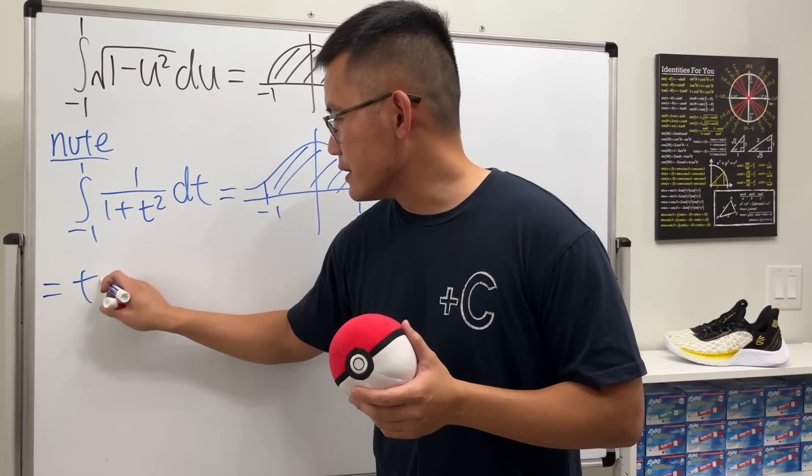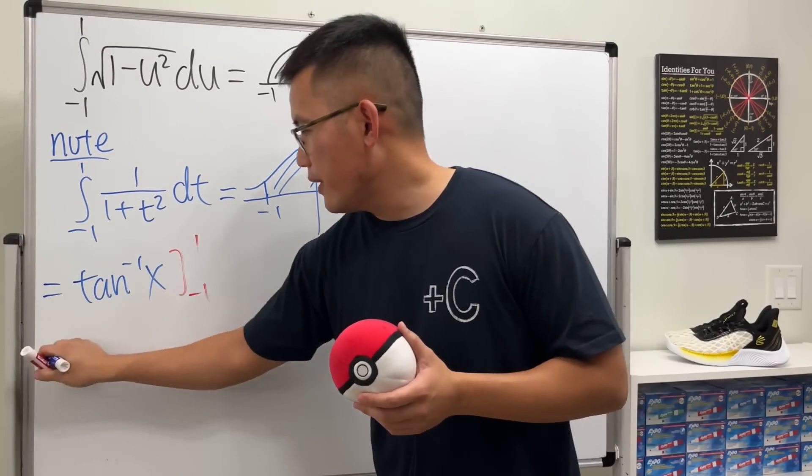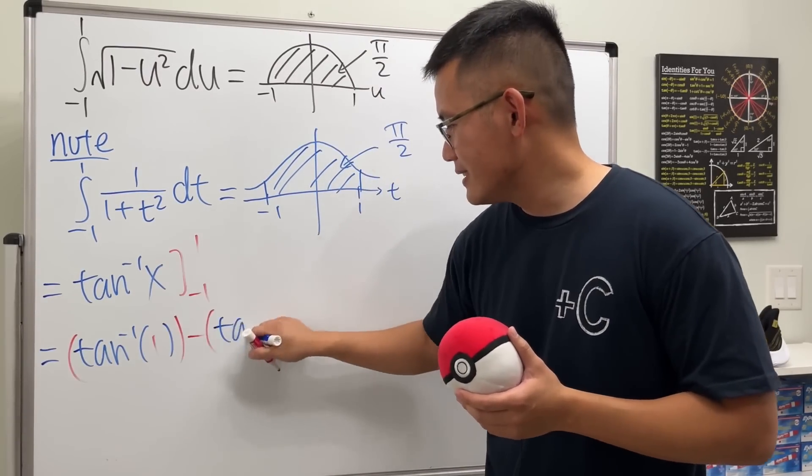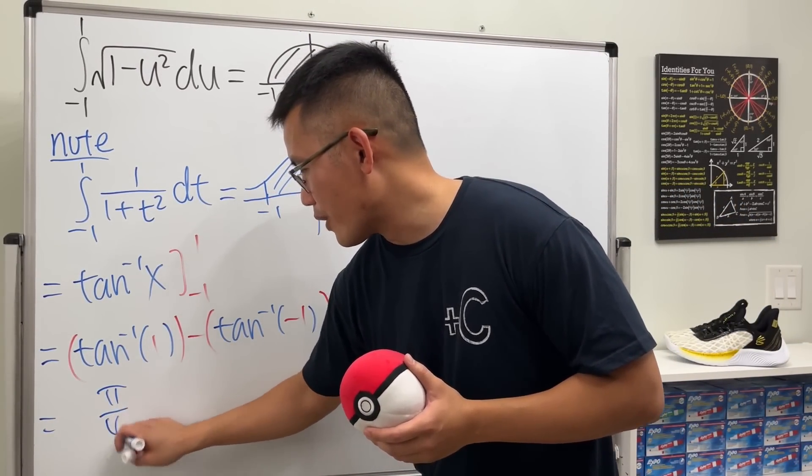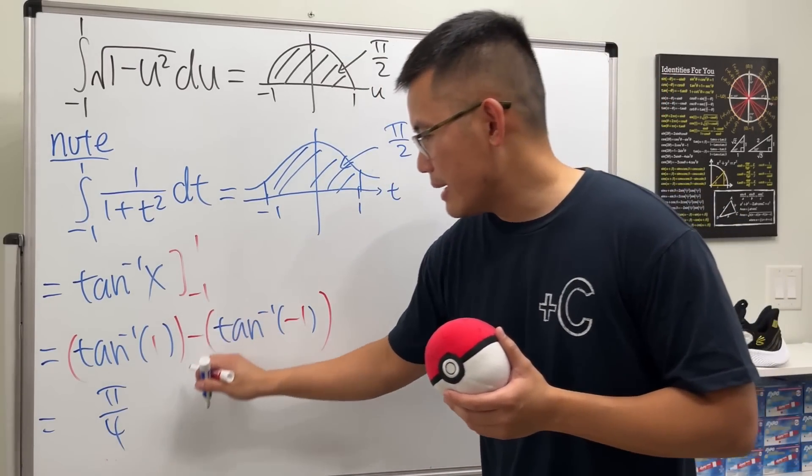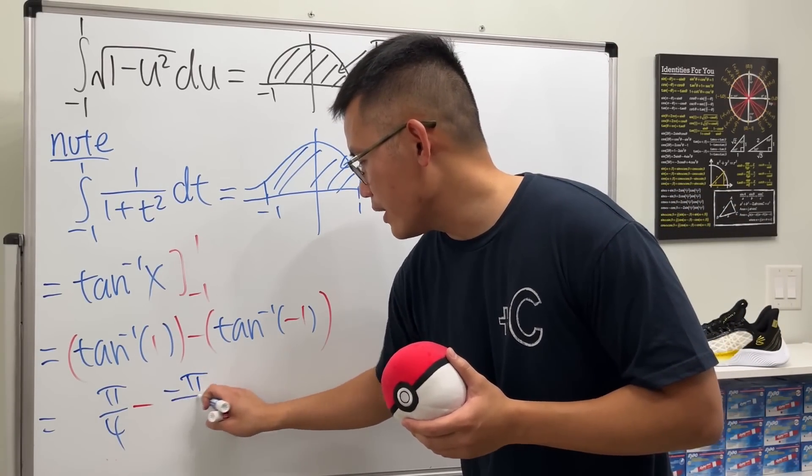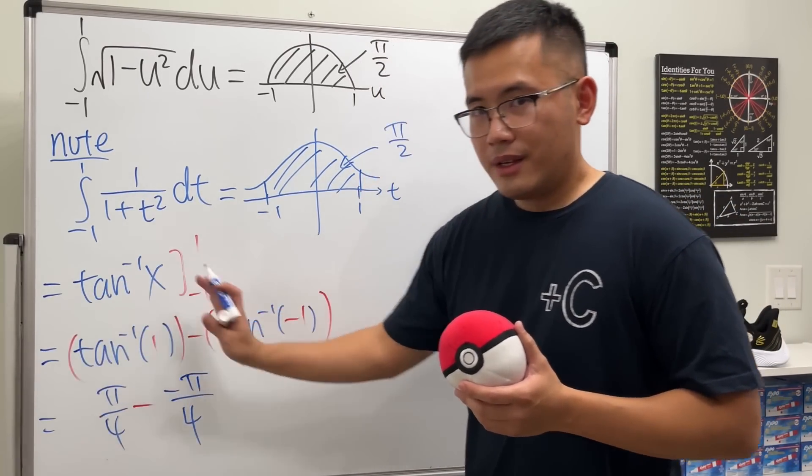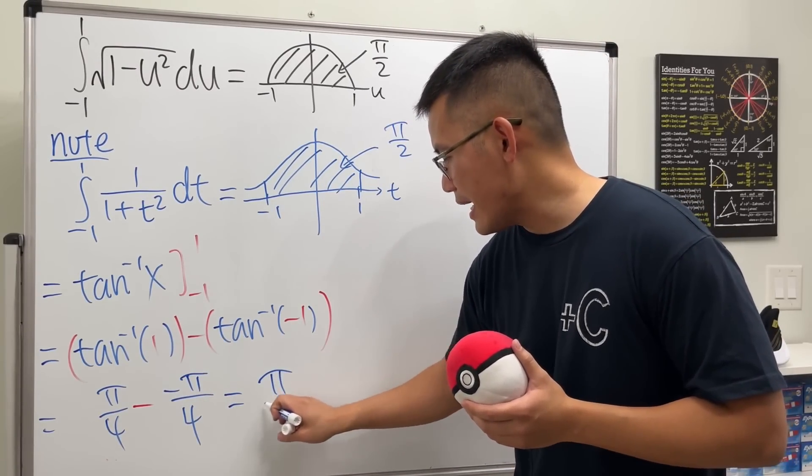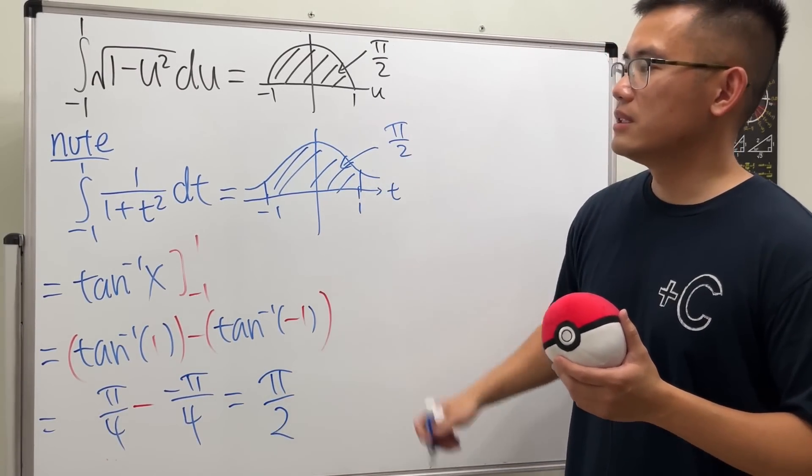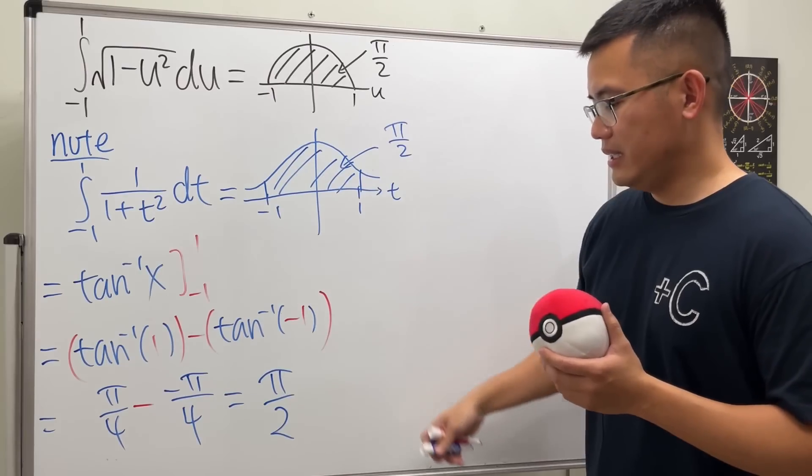If we integrate this, we will get inverse tangent of x, and then we're just going to be plugging numbers. All right, first one we get π/4—inverse tangent of 1—and then minus inverse tangent of -1, we get -π/4, which is just going to be a plus. So everything together we do get π/2, which is this value here. So in terms of areas, they are equal.